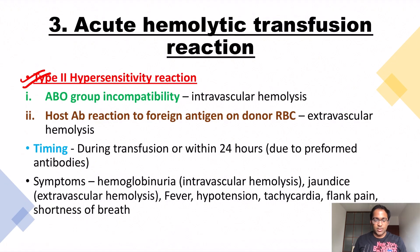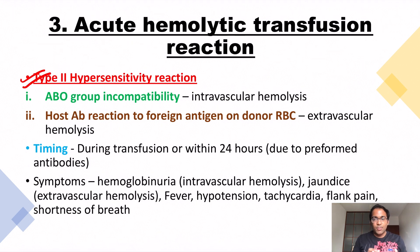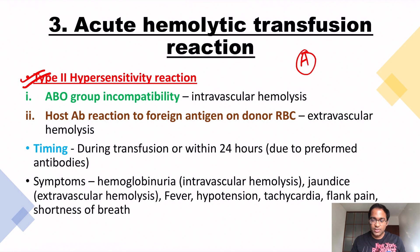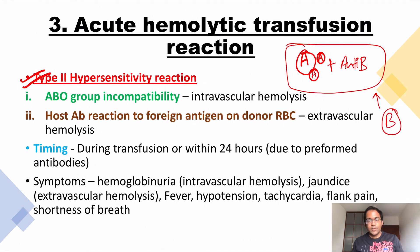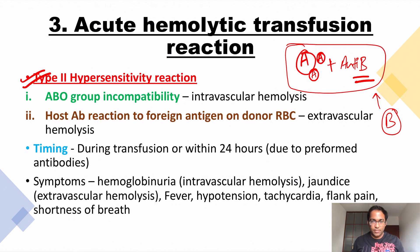The next is acute hemolytic transfusion reaction. This is a type 2 hypersensitivity reaction and the pathomechanism could be due to ABO group incompatibility — meaning you gave the wrong blood group to the wrong person. For example, a person with blood group A has antigen A on their RBC and antibodies against blood group B. If you give this patient blood group B, there will be massive hemolysis because they have anti-B antibodies.